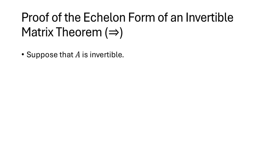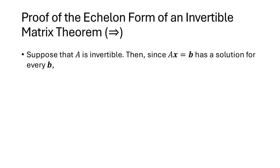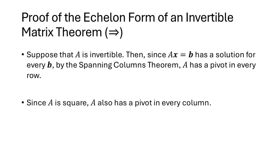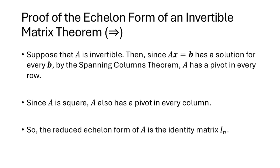Let's focus on the first theorem. We need to prove two directions. Starting with A invertible: since A is invertible, the equation Ax equals b has a solution for every vector b, so by the spanning columns theorem, A must have a pivot in every row. Since A is square, it must also have a pivot in every column, which means the reduced echelon form of A is exactly I_n.